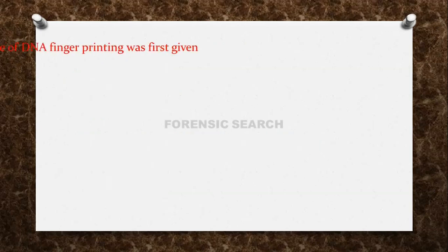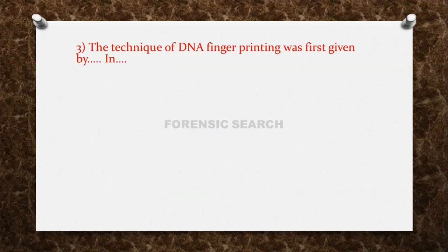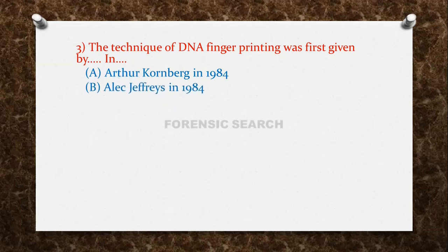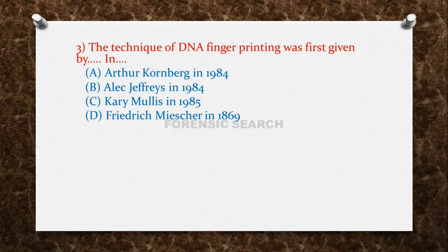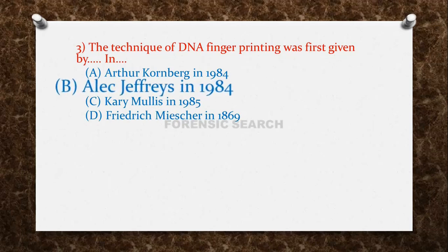The next question: the technique of DNA fingerprinting was first given by blank in blank. Option A: Arthur Kornberg in 1984. Option B: Alex Jeffries in 1984. Option C: Carey Mullis in 1985. Option D: Frederick Mischer in 1869. The correct answer is option B — Alex Jeffries in 1984.